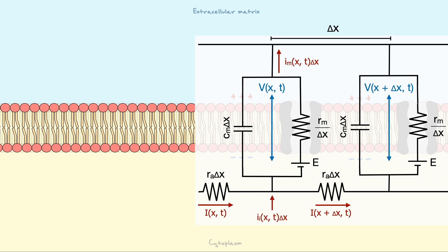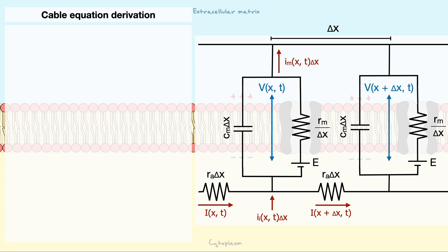The final piece before we start discussing the cable equation is to indicate the injected current, which again is per unit length. Note that the current does not come from within the cell, but having the arrow like this will make the derivation more intuitive with regards to Kirchhoff's law. Alright, we now have every component to derive the cable equation.